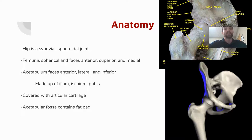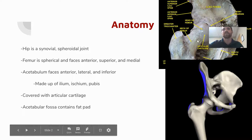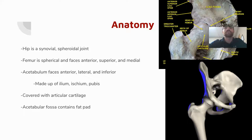The femur is the spherical structure — the ball in the ball and socket analogy — and it faces anteriorly, superiorly, and medially. The acetabulum faces inferiorly, laterally, and slightly anteriorly, and is made up of the ilium, ischium, and pubis to form the innominate. Importantly, both the acetabulum and femoral head point slightly anteriorly, meaning there is some relative instability on the anterior aspect of the femoroacetabular joint.